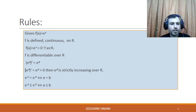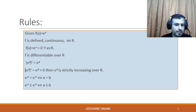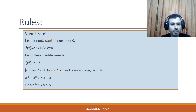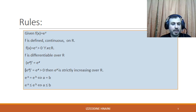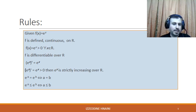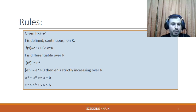Graphically, we can notice that the graph of the exponential function extends from −∞ to +∞. Second, the exponential function eˣ is always positive. Using the graph, we can notice that the graph of the exponential function is always above the x-axis. Third, the function eˣ is differentiable on ℝ, and the derivative of eˣ is eˣ itself.